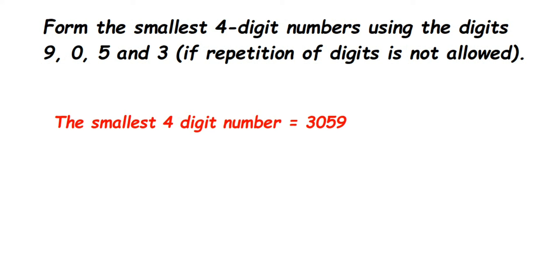That's it. If you want to write down the greatest number, it will be 9530—you just write down the numbers in descending order. In case you have any further questions or doubts, you can drop a comment. Thank you so much for watching.